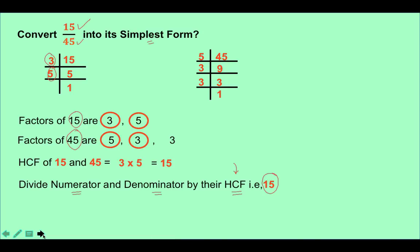Now if I divide 15 upon 45 by the HCF, I get 1 upon 3. How did I get this? I divided 15 by 15 and 45 by 15. So 15 divided by 15 gives 1, and 45 divided by 15 gives 3. In other words, 15 upon 45 converted into its simplest form is 1 upon 3.